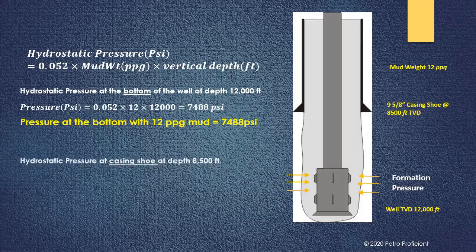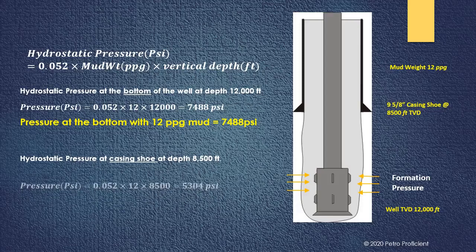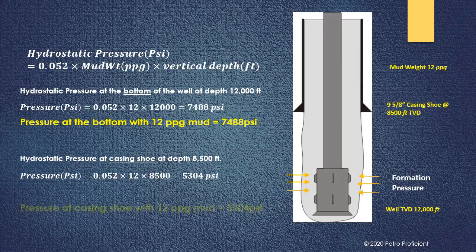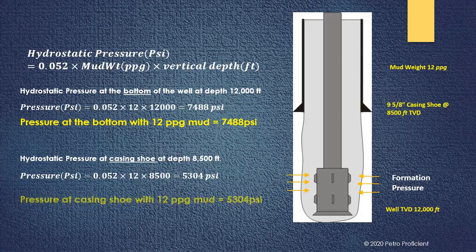Hydrostatic pressure at 9 5/8 inch casing shoe is 0.052 times 12 times 8,500 feet which equals 5,304 pounds per square inch.